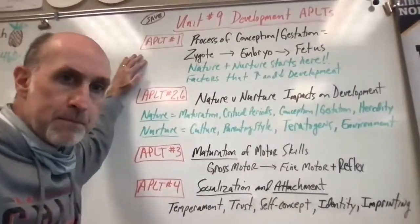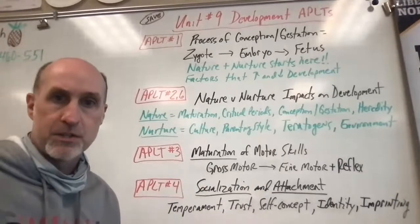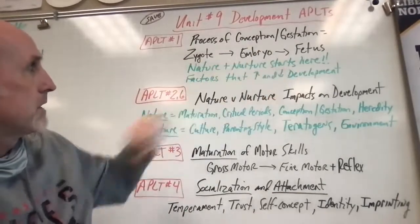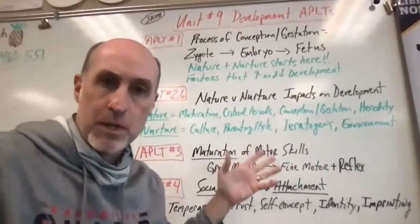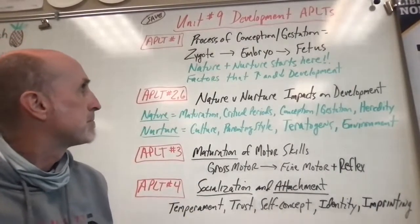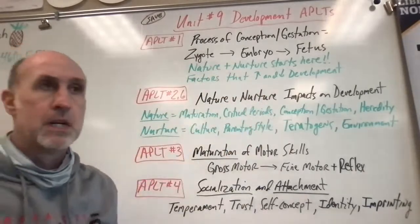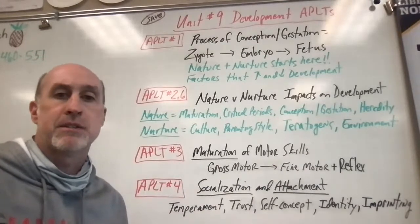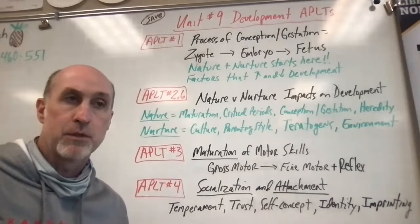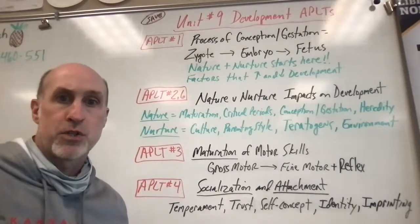So Learning Target Number 1 covers the process of conception and gestation. What you need to know is that there are three fundamental stages: zygote, then at two weeks embryo, and then fetus. These are the three general stages of conception and gestation that psychology focuses on, especially in development. What's important to remember is that the nature-nurture influences on development start here, during these three stages.